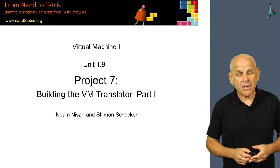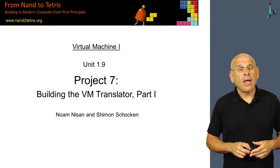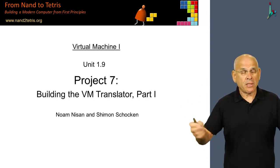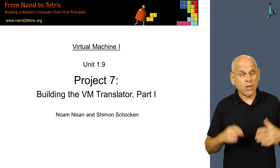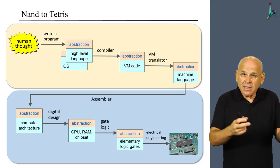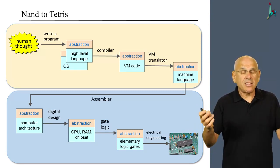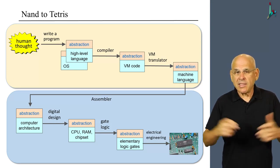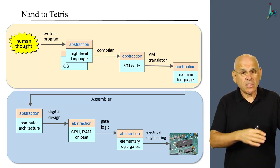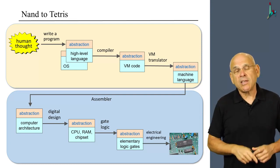In this unit, we discuss project 7 in which we build the first part of our VM translator. Since this is the first project in the course, I'd like to say a few words about the big picture. What you see here is the overall NAND to Tetris journey, which starts, if we think about it top down, with some human thought or fantasies about developing a Tetris game or a Pong game, and then you go through several stages of construction until you end up with a program that actually runs on a real computer.